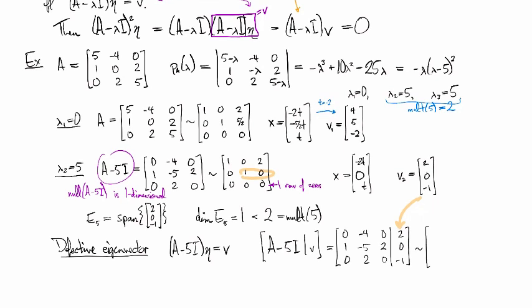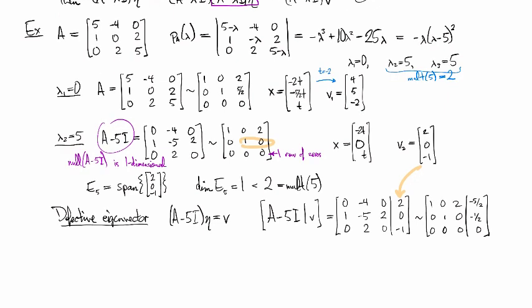And then I row reduce, and I find [1 0 2 -5/2; 0 1 0 -1/2; 0 0 0 0]. And, so I end up with a solution that looks like [5/2 - 2t, 1/2, t].